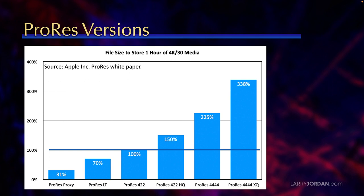When it comes to the other flavors of ProRes, what we're principally getting is differences in file size and, to a lesser extent, improvements in image quality. According to Apple's ProRes white paper, if we set ProRes 4-2-2 equal to 100% for storing one hour, ProRes LT saves us 30% in file space, ProRes Proxy saves us 70% but can't be used for final output, ProRes HQ is 50% larger, ProRes 4x4 is about double, and ProRes 4x4 XQ is about three and a half times larger than ProRes 4-2-2.